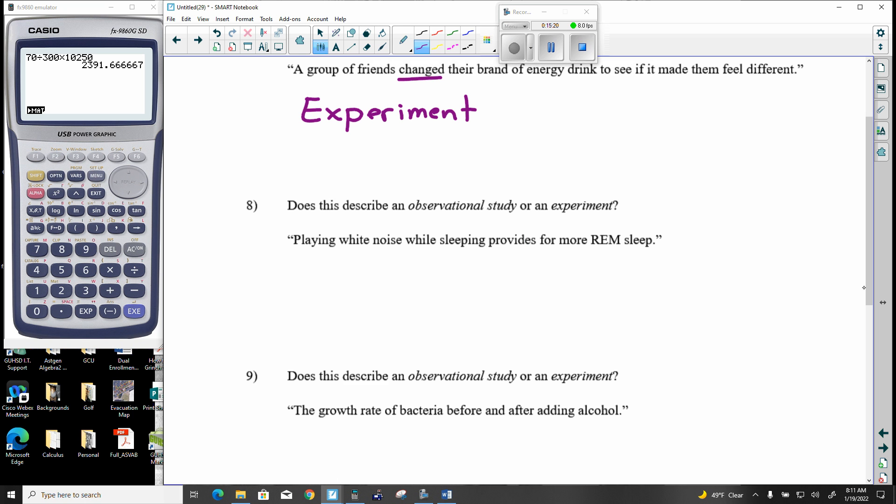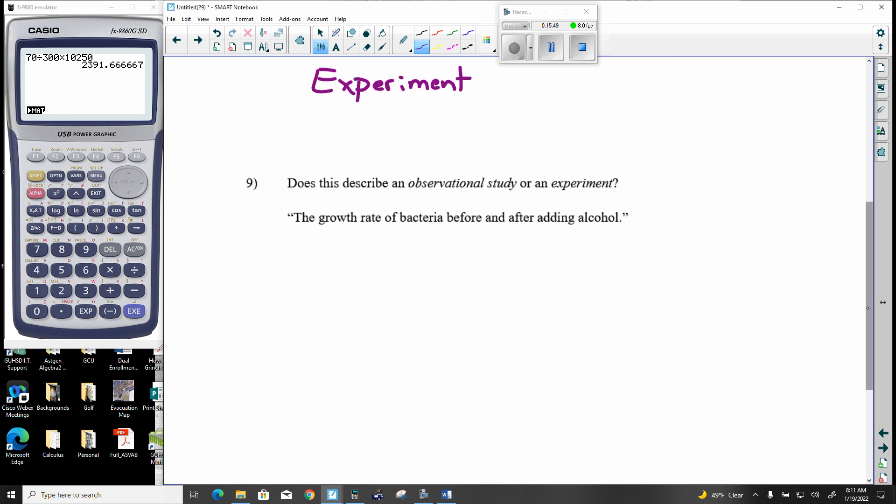Playing white noise while sleeping provides more REM sleep. So again, you introduce this white noise. You're seeing if it makes a difference. There's a control group and there's an experiment group. Control group means what would happen if nothing happened. And this white noise is the experiment. The growth rate of bacteria before and after adding alcohol. That's an experiment. The bacteria just won't decide to add alcohol to their environment. You're introducing it to something. You're changing nature.